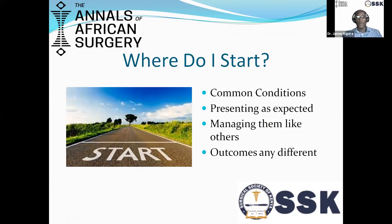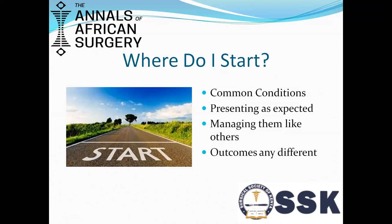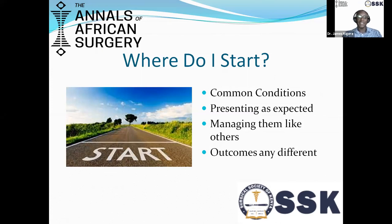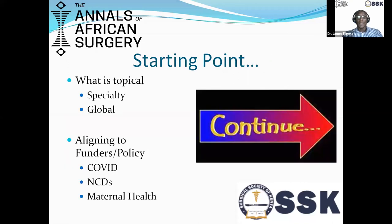It might help to start with things that are common where you are. If fractures of the tibia are common, that might be where you want to start. If it's hernias, that's a good place to start. Then ask yourself, what is unique about the conditions that you're seeing? Are they presenting as we expect them to present? Are we managing them the way we should, or the way others are managing them? Are our outcomes any different from others? Sometimes it helps to look at what is topical in your specialty. If you are a hepatobiliary surgeon, aligning yourself with what is topical in your specialty is not a bad idea. Aligning yourself with what is topical globally — like in this pandemic — may not be a bad idea as well.